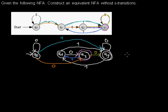Now I've looked at all epsilon transitions and I'm done. To make sure I'm correct, I can do a simple check: I write down the regular expression for each automaton and they have to be the same. It's just a little test so you can verify if you did everything right.